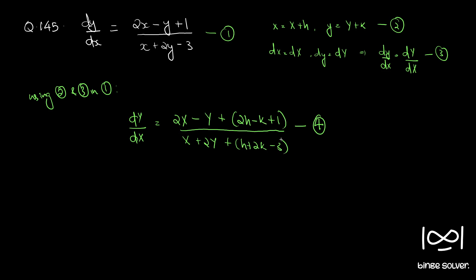So we have to find h and k which satisfies the conditions: 2h minus k plus 1 equals 0 and h plus 2k minus 3 equals 0.